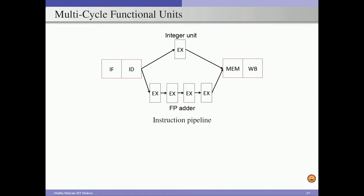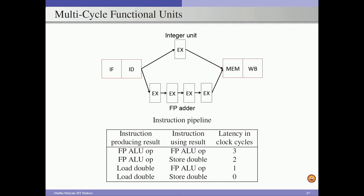We consider multi-cycle functional units in our system, with 4-stage pipelining for the floating point adder and 1 pipeline stage for the integer unit. The remaining stages — instruction fetch, instruction decode, memory access, and write back — all take a single pipeline cycle. Given this pipeline design, when we apply operand forwarding to minimize unnecessary stalls, these are the latencies that the dependent instruction can incur with respect to the producing instruction.